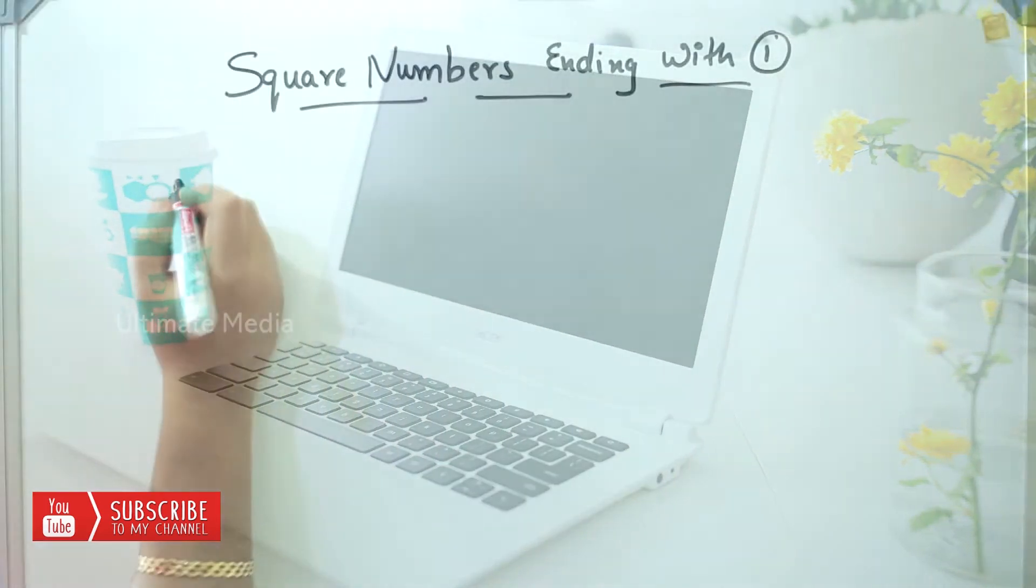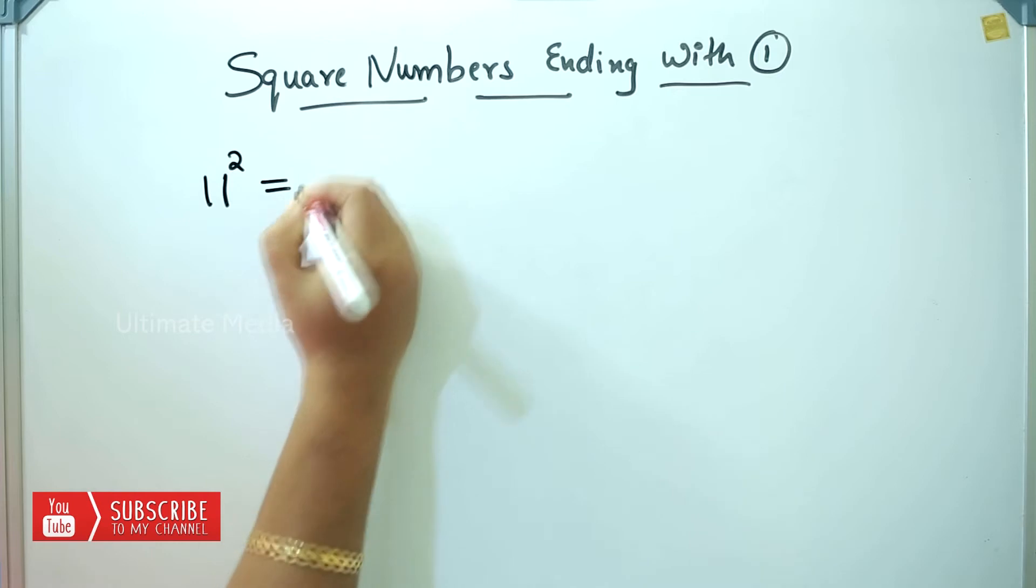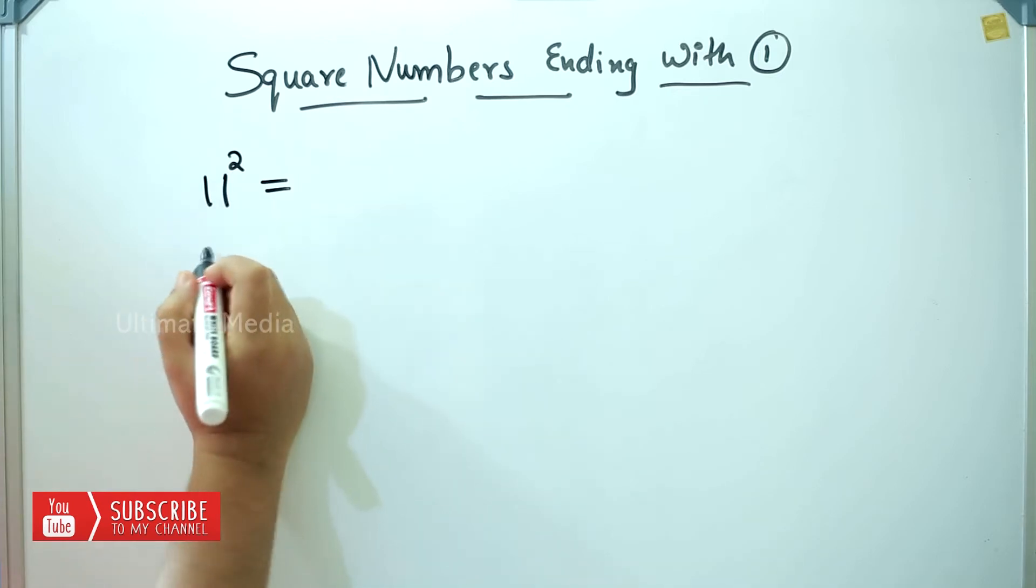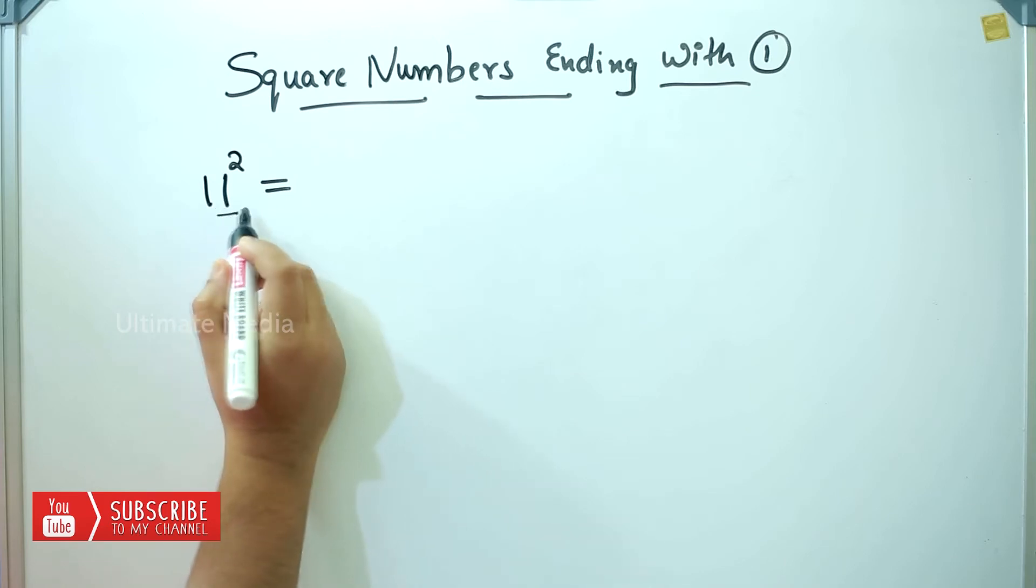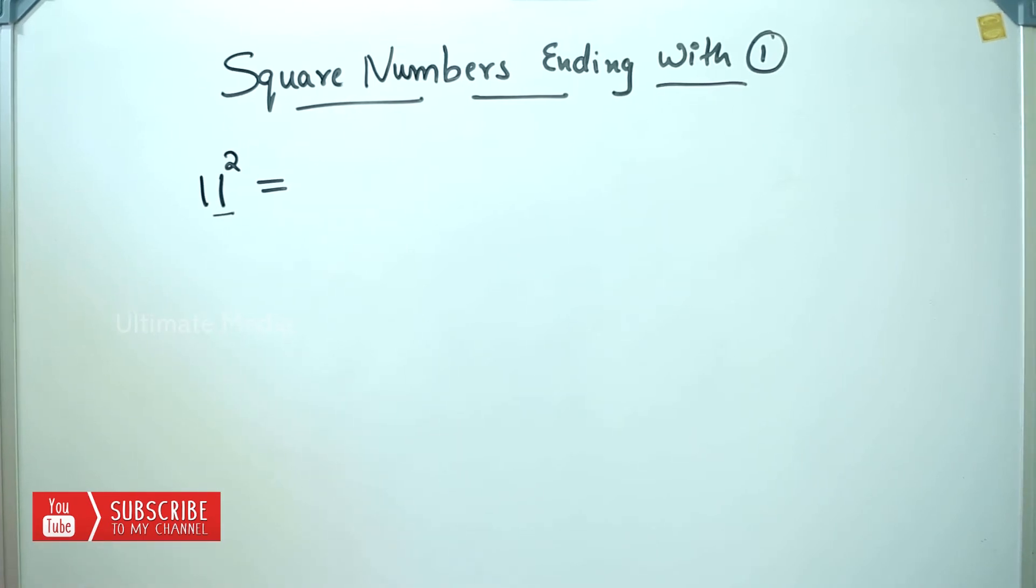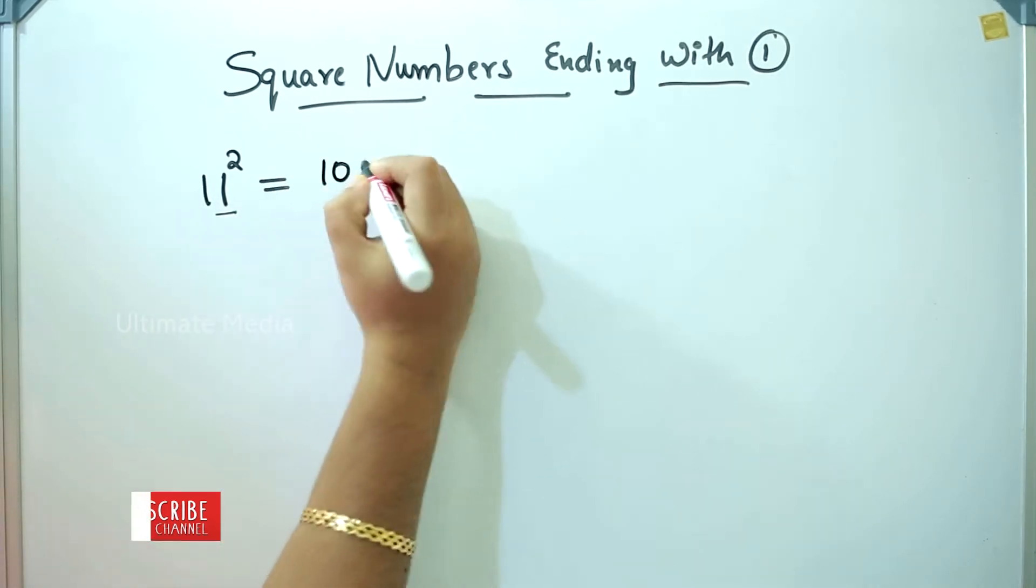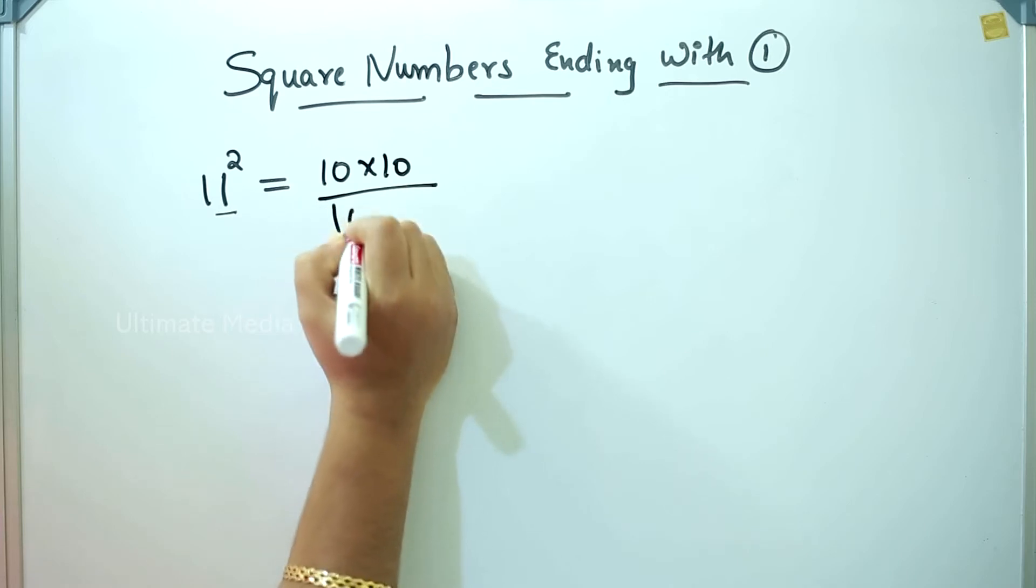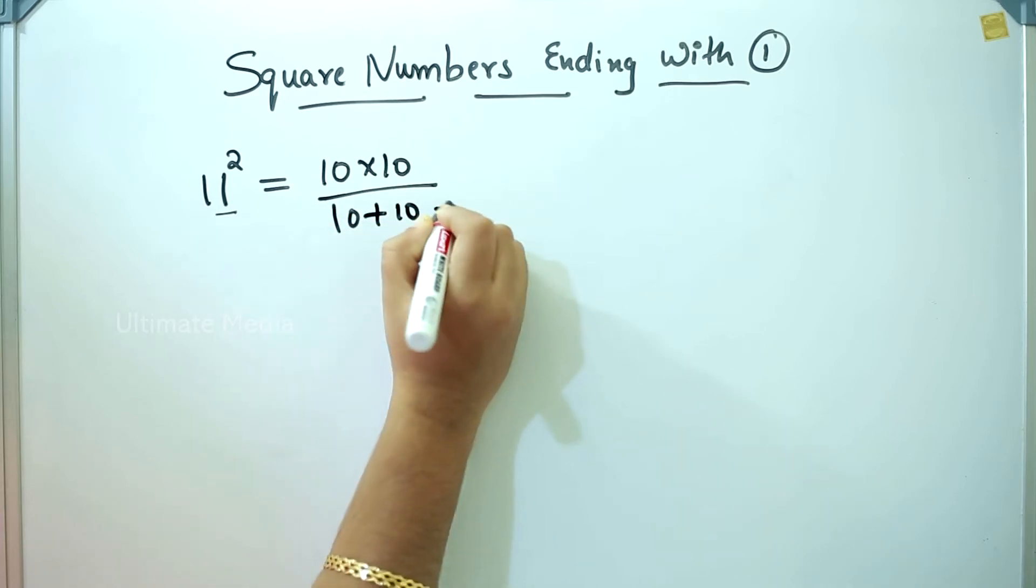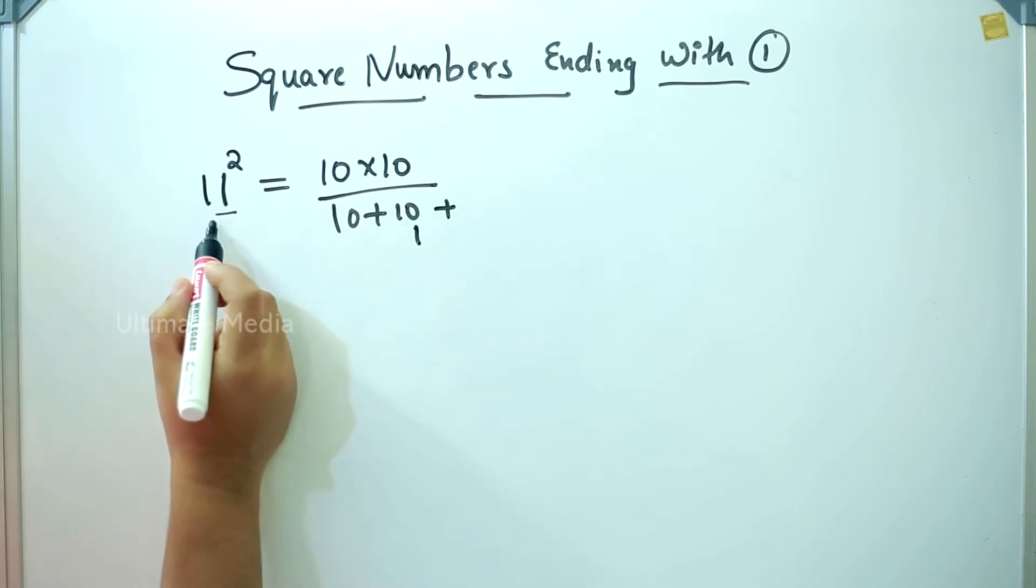I'm going to talk about 11 square. We will convert 11 to 10 plus 1. The formula is: convert 10 into 10 plus 10 plus 1. This is the method for calculating 11 squared.